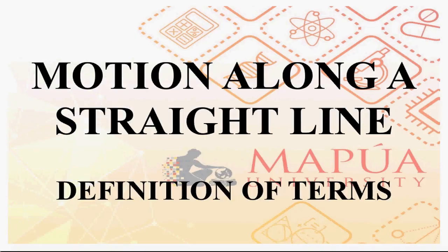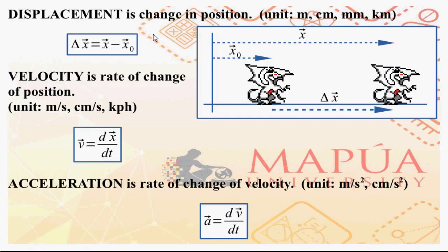Let's start our discussion on the topic of motion along a straight line. First, some definition of terms. Displacement is change in position. An object has position with respect to the origin. Initial position x₀. If the object changes position from x₀ to x, the change in position is delta x — final x minus initial x. Delta x is referred to as the displacement of the object.